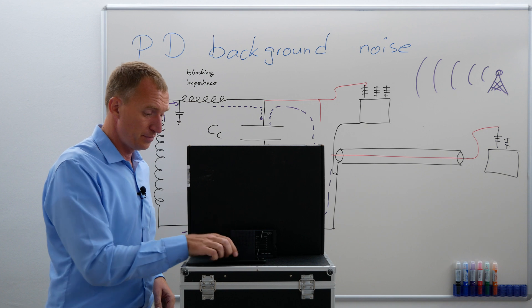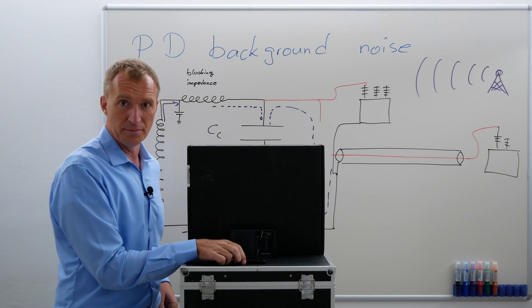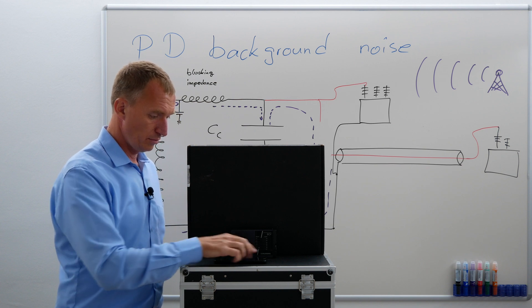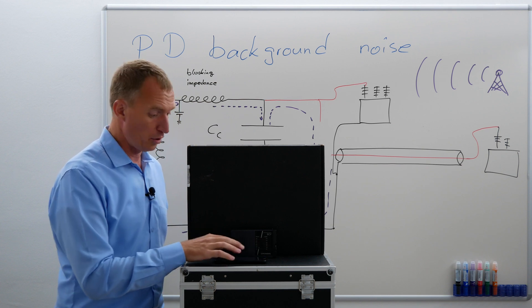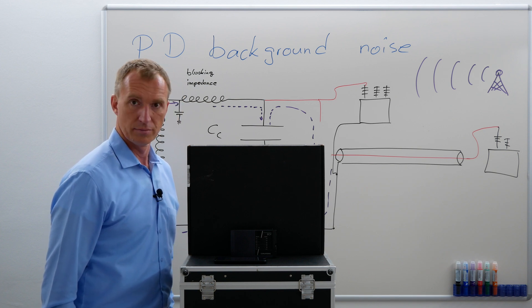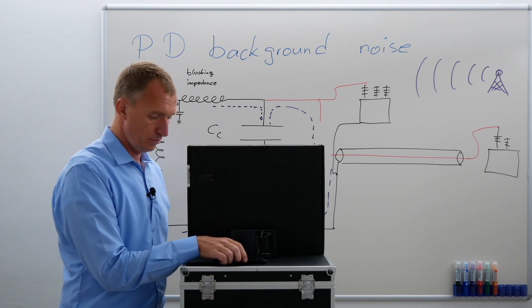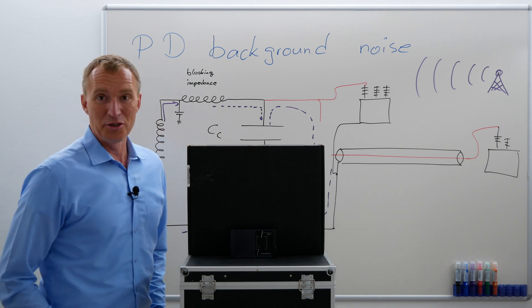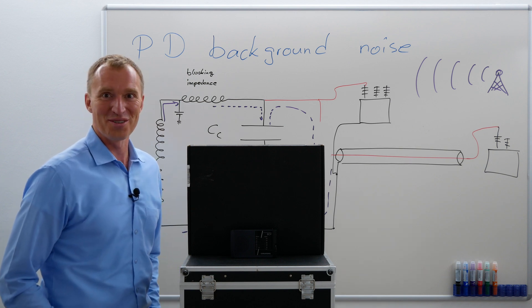So watch out, monitor on, and airplane mode off. So, what does it tell you? Keep your phone off during partial discharge measurement.